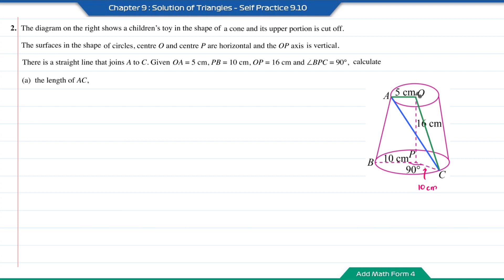If we connect the straight line AO and OC to AC, this creates a right angle triangle with the angle at O equal to 90 degrees. So we can find the length of AC using the Pythagoras theorem if we know the length of OC. The triangle OPC is also a right angle triangle, and we know the lengths of OP and PC. Therefore we can find the length of OC, which is the hypotenuse. So OC is equal to the square root of 10 squared plus 16 squared, which is equal to 18.868.